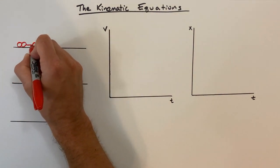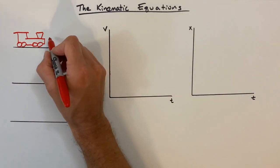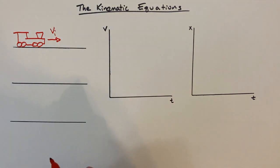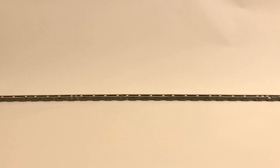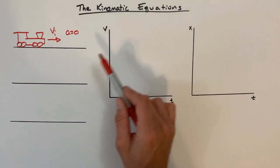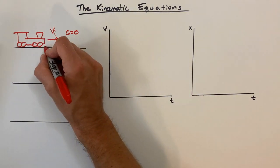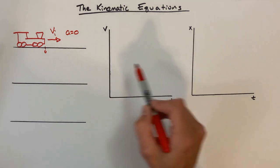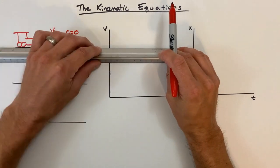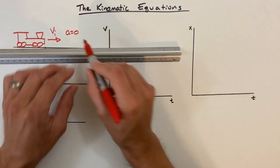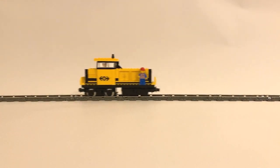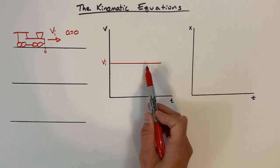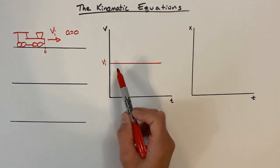Our first train is going to travel down the track with some initial velocity, VI. And that velocity is never going to change. That means the acceleration is zero. We're going to graph the velocity versus time of this train. This train starts at a position of zero and moves along down the track at a constant velocity that we're calling VI, the initial velocity. Because acceleration is zero, that velocity is never going to change. So the velocity of the train is going to be constant.